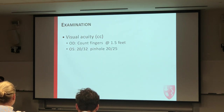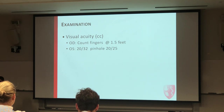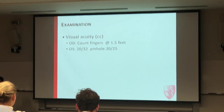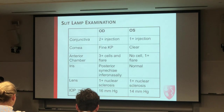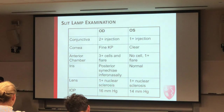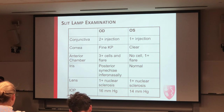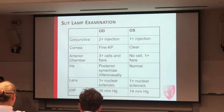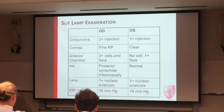Visual acuity is count fingers at one and a half feet in the right eye, and 20/32 in the left eye, pinhole to 20/25. This is mainly a unilateral process. Slit-lamp examination shows the eyes are inflamed, with significant inflammation in the anterior segment, 3+ cells in the right eye and none on the left. The right eye has elevated pressure.